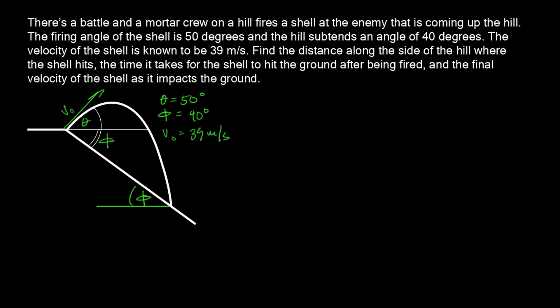What do we need to find? We need the distance along the side of the hill where the shell hits — that's this distance D. We also need the time it takes for the shell to hit the ground after being fired, so we'll find T. And we need the final velocity, V_final. So those are the three things we need to find.